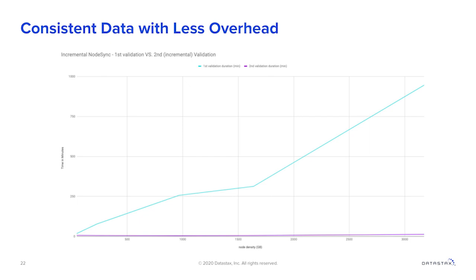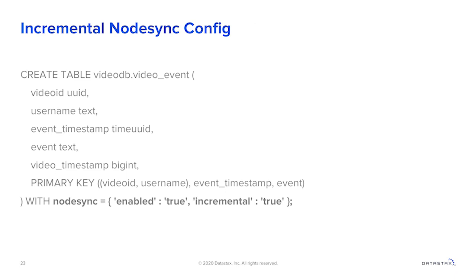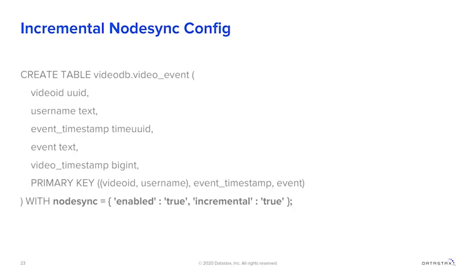By default in DSE 6.8, incremental NodeSync is enabled. If you have an existing cluster and upgrade to 6.8, you can add incremental NodeSync simply by using the DDL code shown, using an ALTER TABLE statement. The WITH option here is the line you use to configure NodeSync — this is something configured through CQL, not at the full cluster level itself.